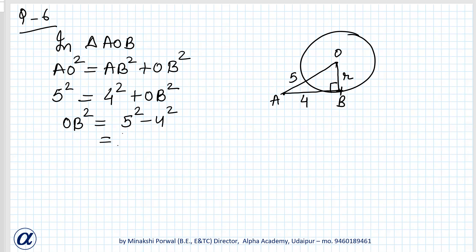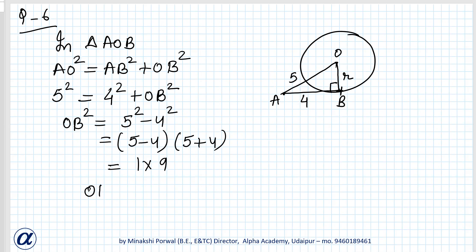OB² = (5 − 4)(5 + 4) = 1 × 9 = 9. So OB = √9 = ±3. Since distance cannot be negative, only the positive answer applies, so OB equals 3 cm.